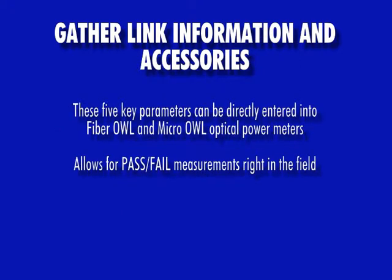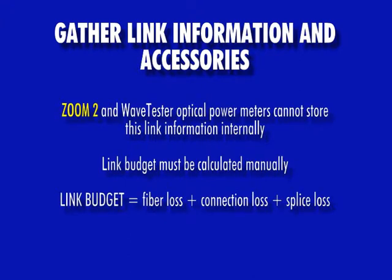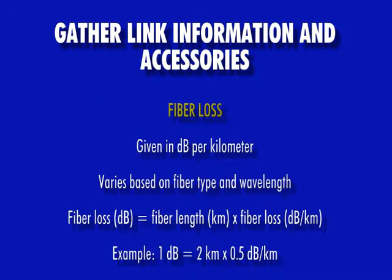When using a Micro OWL or Fiber OWL optical power meter, these parameters can be entered directly into the device to calculate the link budget. However, if the link budget needs to be calculated manually, this is done by adding together the fiber loss, connection loss, and splice loss. Fiber loss is given in dB per kilometer and varies based on fiber type and wavelength. To calculate fiber loss, multiply the fiber length in kilometers by the fiber loss rate.